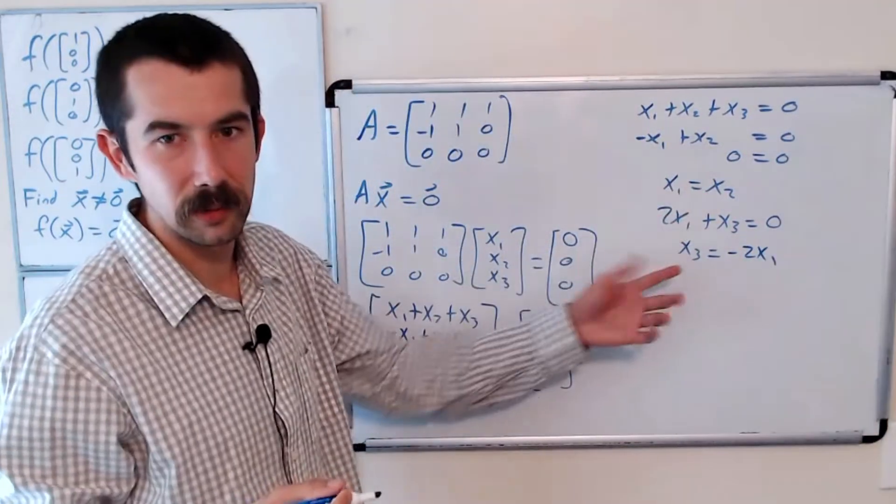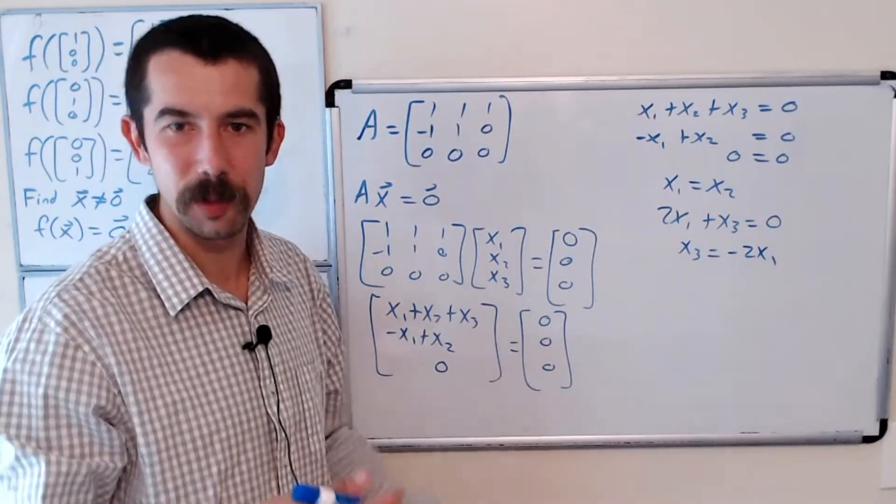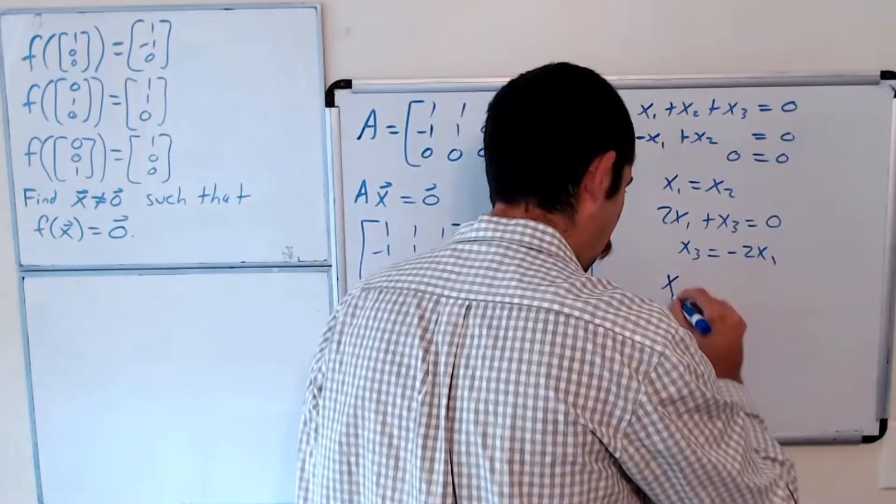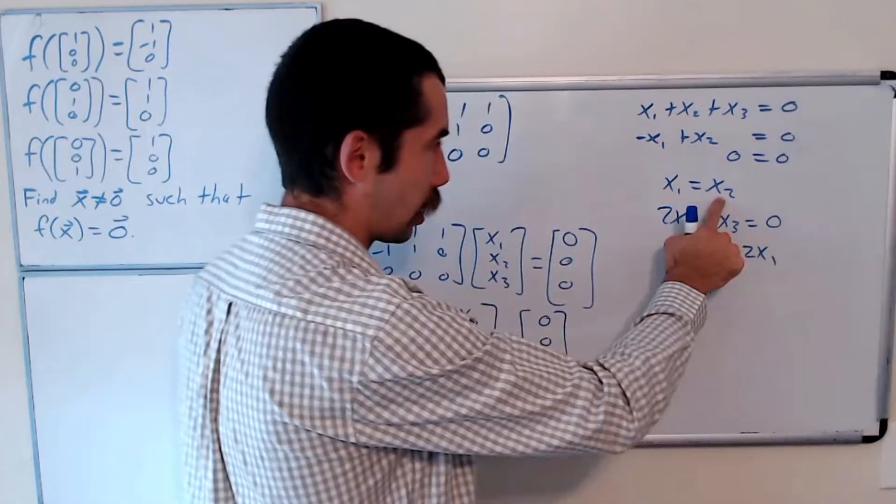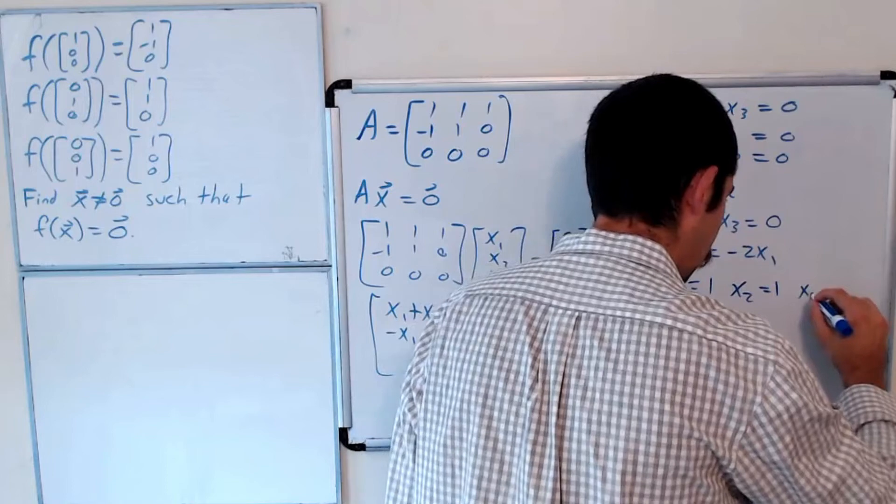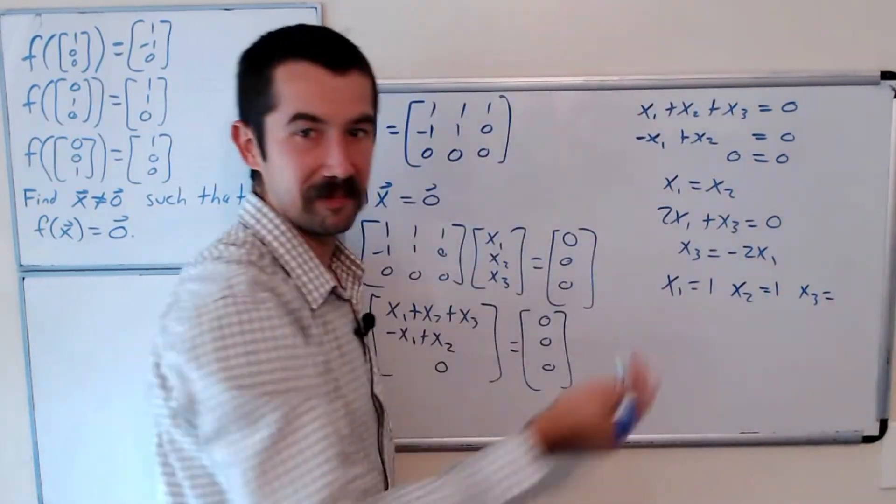Okay, so we have each of the variables described in terms of x1. So we can pick our favorite value for x1. I'll pick 1. So we let x1 = 1, x2 is also equal to 1, and x3 is equal to -2.